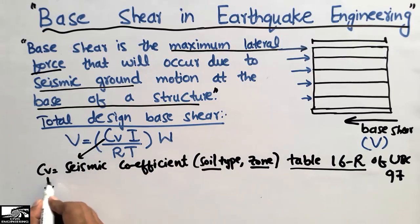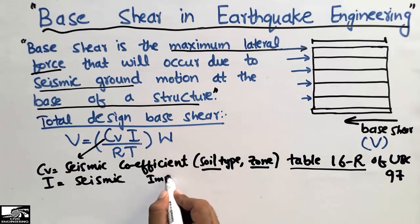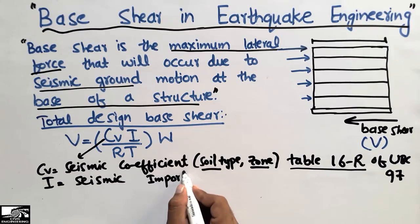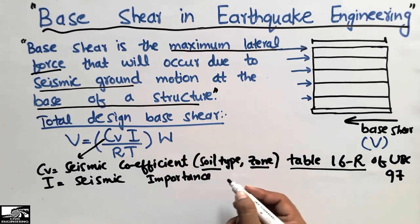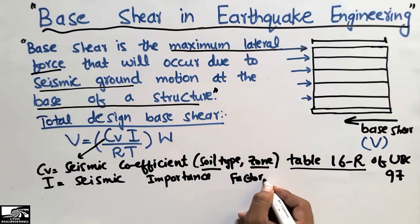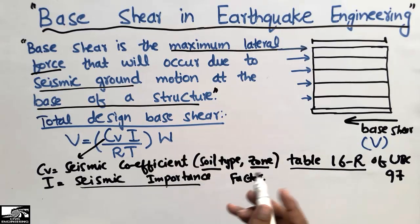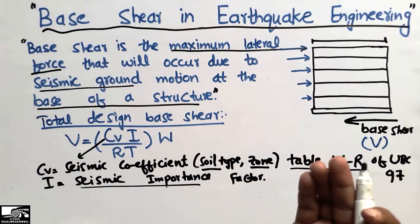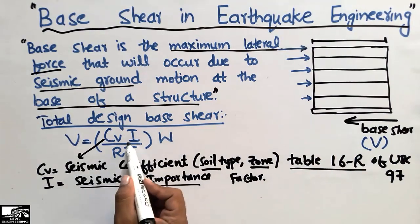I is the seismic importance factor of the building. It indicates how vulnerable and important the building is in design. For example, a hospital has a high seismic importance factor, whereas a residential building has a lower importance factor.